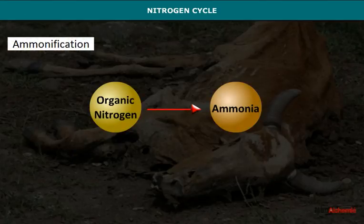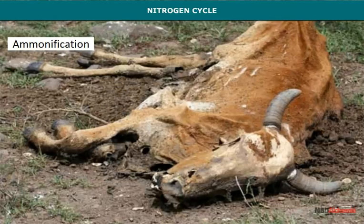Ammonification involves the decomposition of proteins of dead plants and animals, and nitrogenous wastes like urea and uric acid of animals, to ammonia in the presence of ammonifying bacteria.